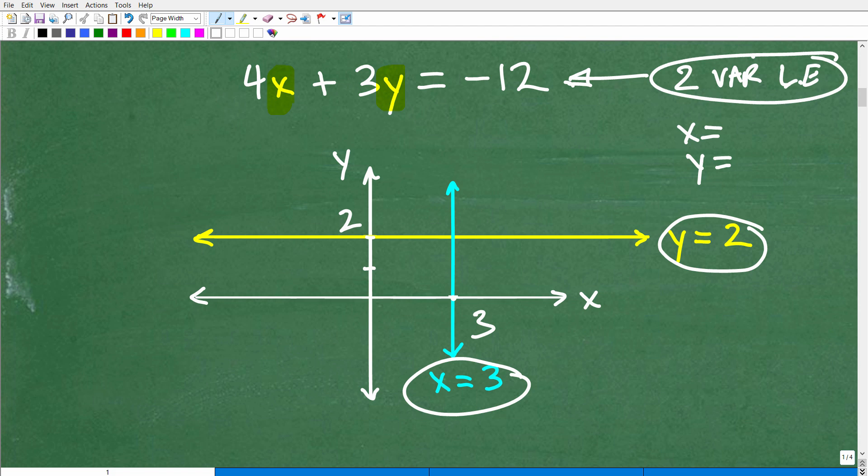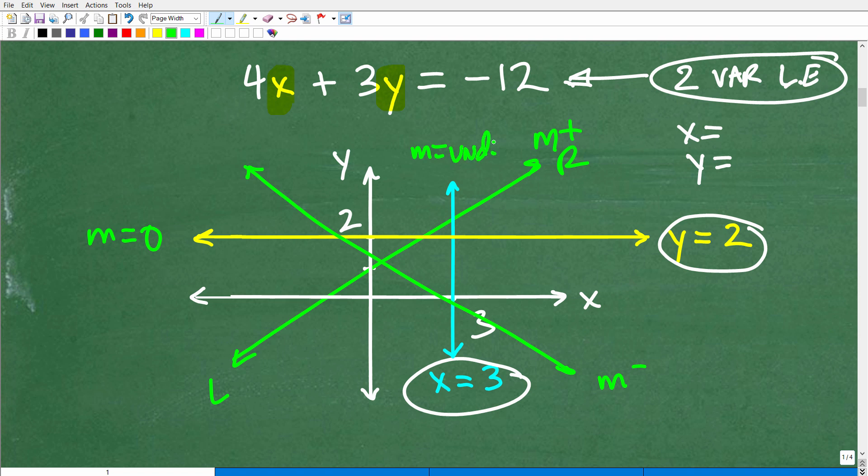But we're talking about a two-variable situation. Any time you have a two-variable linear equation, this is where you're going to have lines that have some sort of angle to them. Lines that increase from left to right that go uphill are going to have a positive slope. Lines that go downhill from left to right have a negative slope.